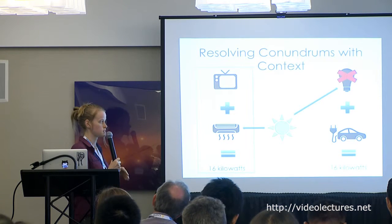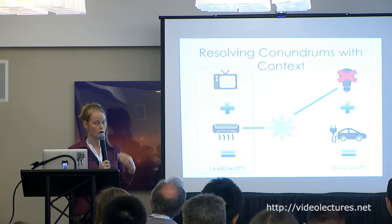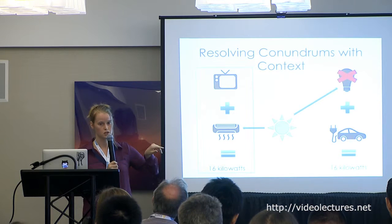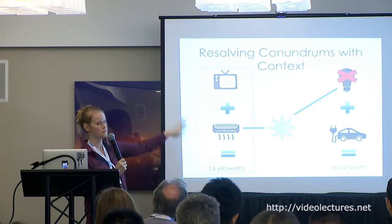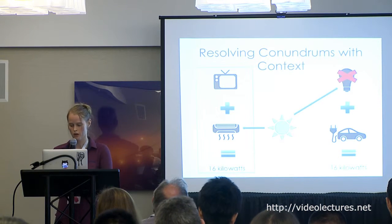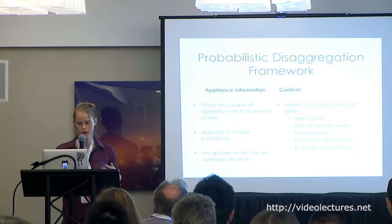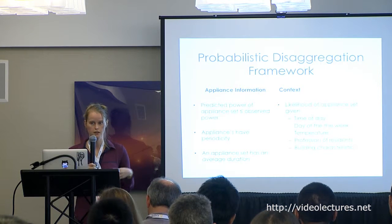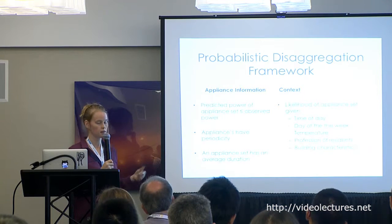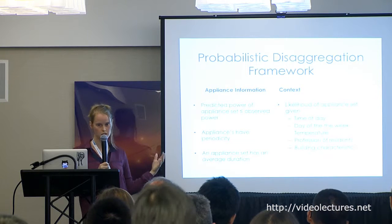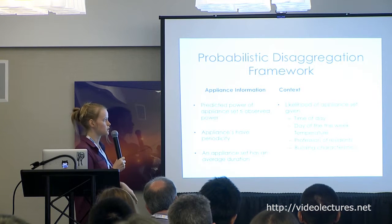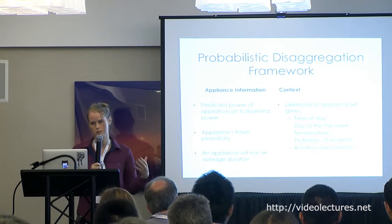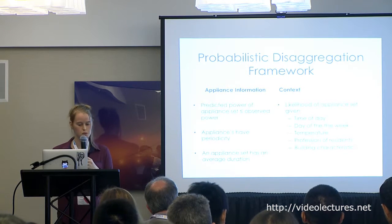That's where context can help. For instance, if we knew it was a bright, hot, sunny day, that would make it more likely that the air conditioner is on and less likely that the lights are on, so we would vote in favor of that set. To put all this information together, we propose a probabilistic disaggregation framework that can use contextual information and enforce the constraint that the sum of predicted power is less than or equal to observed power.